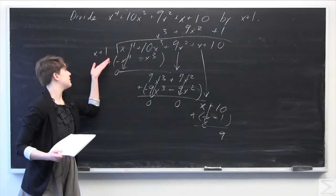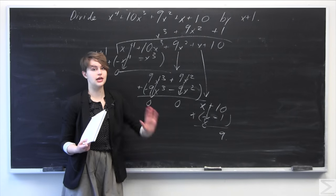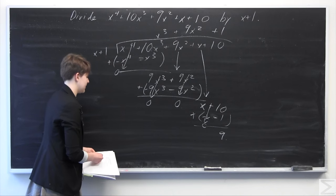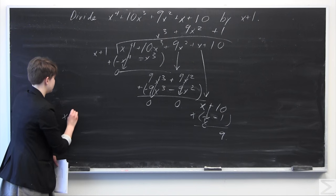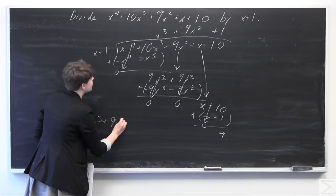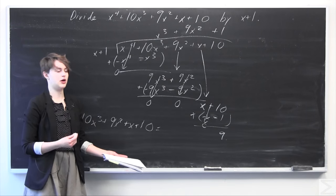And it looks like we can't multiply x plus 1 by anything to get it to go into 9. So it looks like we're all done here. So we can write our final answer here in terms of our polynomial that we started with, x to the 4th plus 10x cubed plus 9x squared plus x plus 10. That's just our original polynomial.